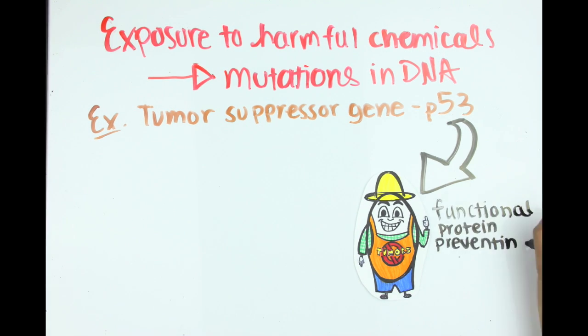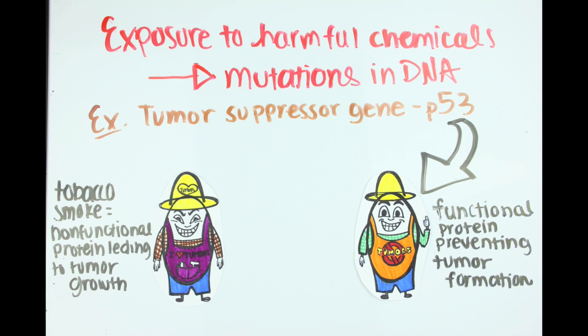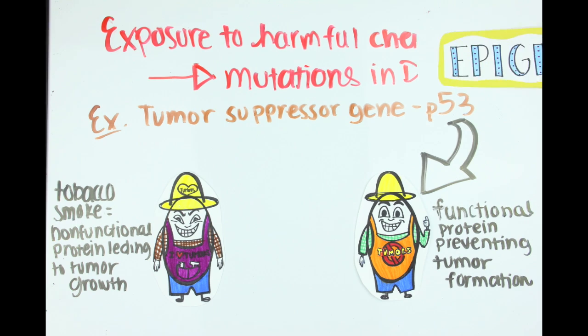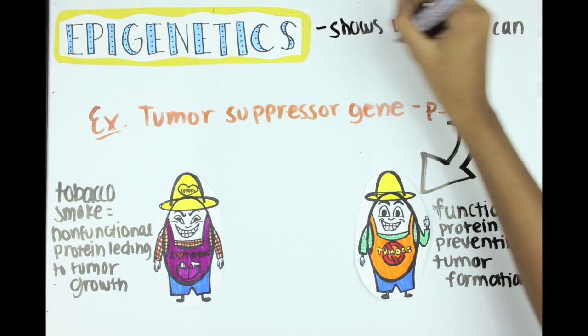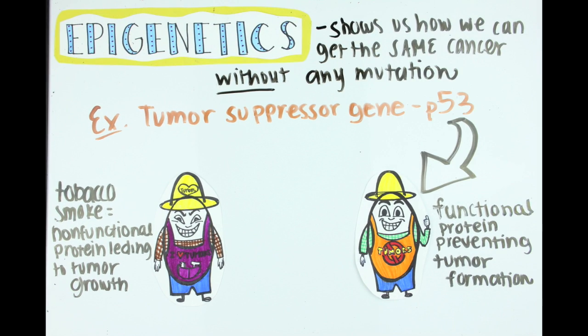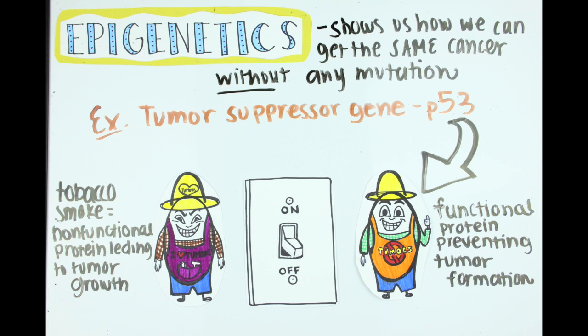It creates a protein to make sure cells divide at a steady rate so tumors don't form. Carcinogens like tobacco smoke, though, can physically change the nucleotide sequence, resulting in the production of a protein that doesn't do its job. This can lead to cancer. But epigenetics shows us how we can get the same cancer without any mutation or change in the DNA sequence at all. Instead, the gene can be turned off and will not be expressed. Then, no tumor suppressor protein is made and cancer forms.